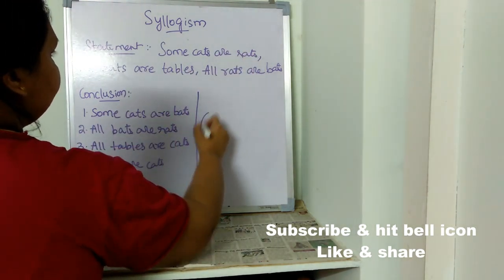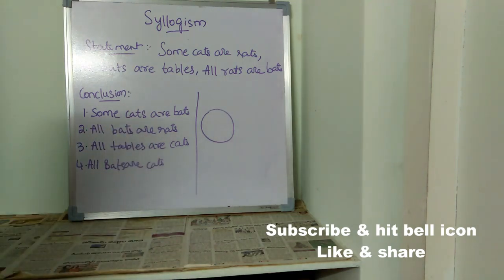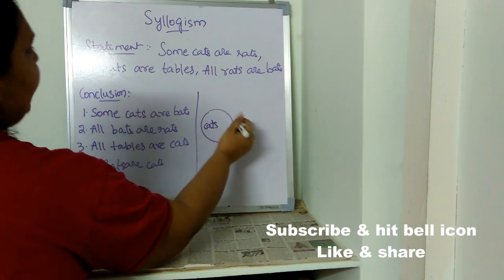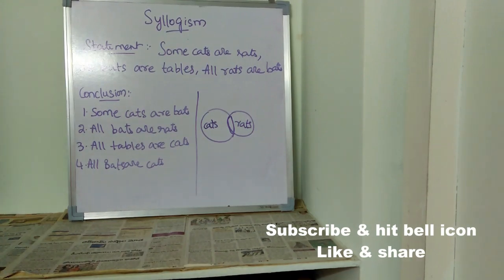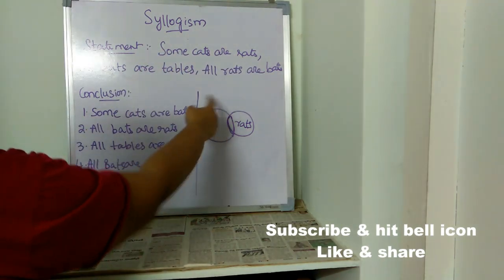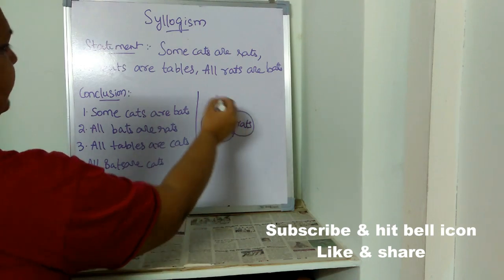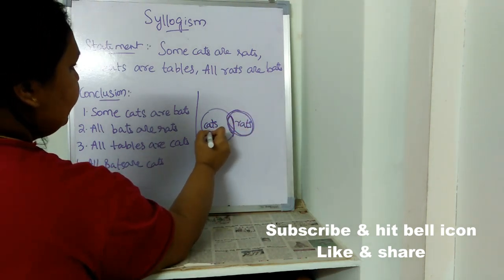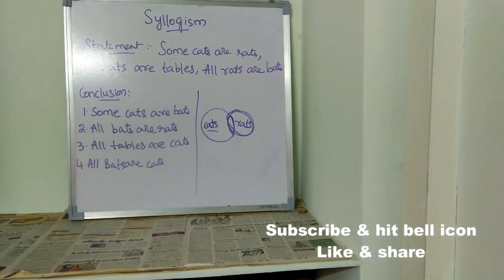Syllogism problems can be solved using diagrams. So for the first statement — some cats are rats — let's think about this. Some cats are rats means there are cats, and some of those cats are also rats, so there is a common point. We draw cats and then draw rats overlapping, because some of the cats are also rats.